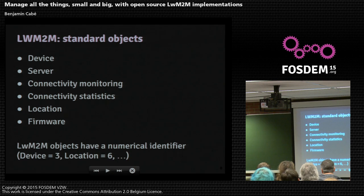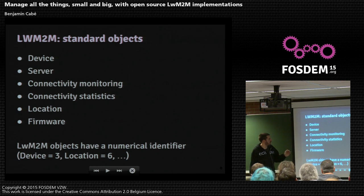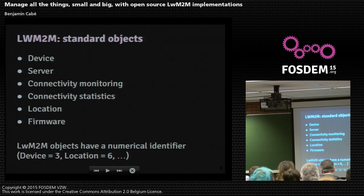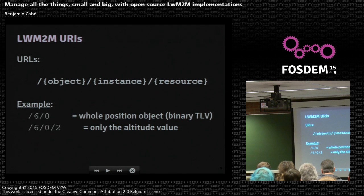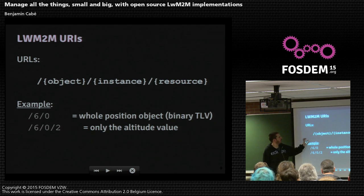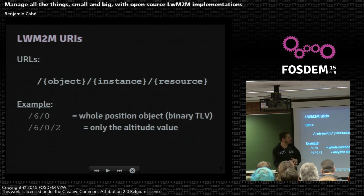There are about seven standard objects: the device, the server — you might have several, including fallback servers — everything related to connectivity, GPS location, and firmware, which we will see in the demo. They all have very short numerical identifiers. Instead of long URLs, you are doing HTTP GETs on very short numbers. An object like location will have several instances — that's how you organize your resource hierarchy.